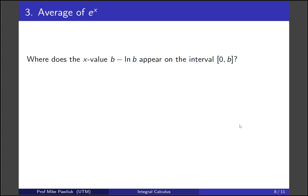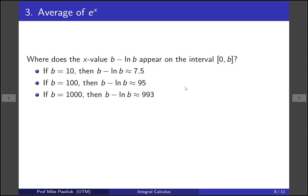So where does this x value b minus ln(b) appear in the intervals 0 to b? Well let's compute some examples and see. If b is 10, then b minus log b is around 7.5, so how close is b minus log b to the right endpoint if b is 10? Well it's 75 percent of the way there, it's three quarters of the way there. If we take b equals 100, then b minus log b is 95, so this is very close to the right endpoint, it's 95 percent of the way there. Okay and if b is 1000, then b minus log b is 993, so it's 99 percent of the way to the right of the interval. So we can see that as you take larger intervals here, the average value is going to be achieved very close to the right endpoint.